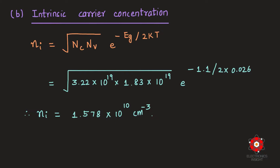The second part asks for the intrinsic carrier concentration ni at 300 K. Since the problem provides effective densities of states, we use: ni = √(Nc × Nv) × exp(−Eg / 2kT). This formula is preferred when Nc and Nv are given directly, rather than deriving ni from mass action law using n₀ and p₀.